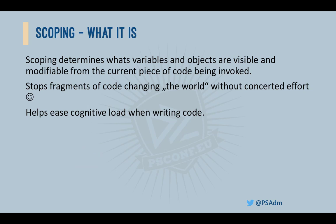So what is scoping? Scoping limits the visibility of variables from pieces of code. Stopping variables defined in one piece of code from being read or overwritten in another piece of code helps us keep control of the state of the program. Imagine you have a variable called 'state' in your current function, but there was also a variable called 'state' in another module library you're using. If changing the value of that variable in your function also changed it in the other module, can you imagine the chaos that would ensue?